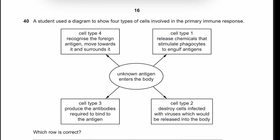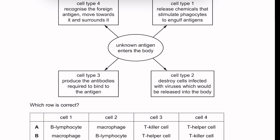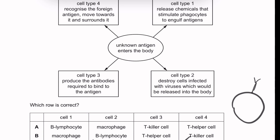Question thirty-nine: a diagram shows four cell types in the primary immune response. Cell 1 secretes chemicals to stimulate phagocytes to engulf antigens — that is the T helper cell, which releases cytokines. Cell 2 destroys cells infected with viruses — that is the T killer cell (cytotoxic T cell). Cell 3 produces antibodies to neutralise antigens — that is the B lymphocyte (plasma cell). Cell 4 recognises the foreign antigen, moves towards it, and surrounds it — that is the macrophage (an antigen-presenting cell), which uses phagocytosis to engulf the pathogen. This was the last question in this variant.